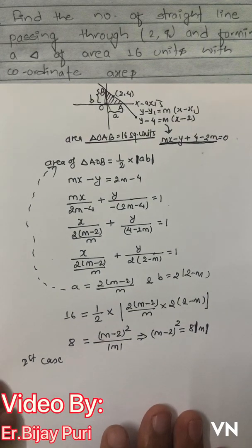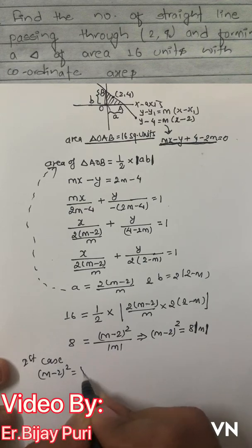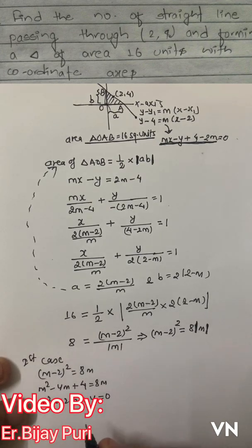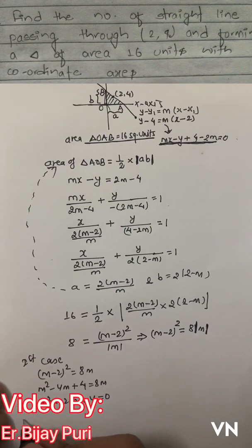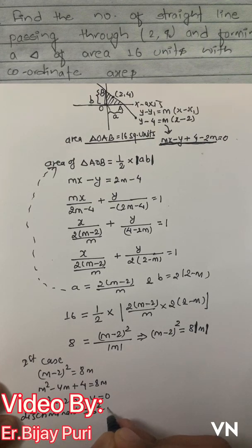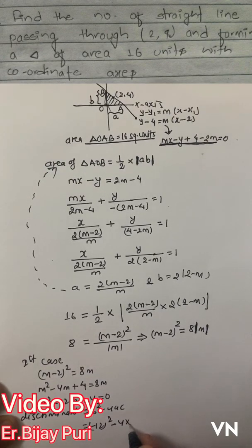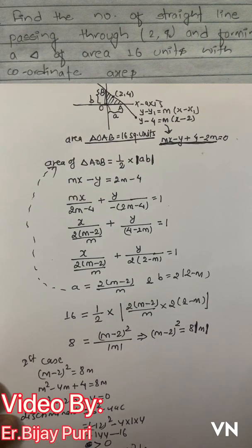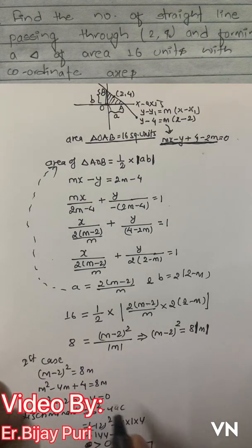First case: taking positive m, (m−2)² = 8m, so m² − 4m + 4 = 8m, giving m² − 12m + 4 = 0. We don't need to calculate exact values of m; we check the discriminant. Discriminant = (−12)² − 4(1)(4) = 144 − 16 = 128, which is greater than 0. That means two distinct real roots are possible from this case.